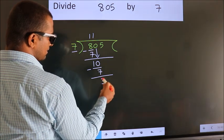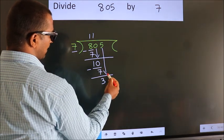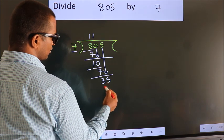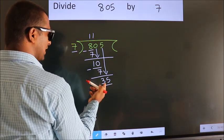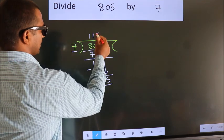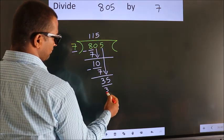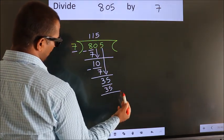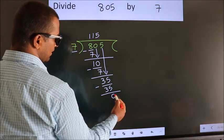After this, bring down the beside number. So 5 down. So 35. When do we get 35 in 7 table? 7 fives 35. Now we subtract. We get 0.